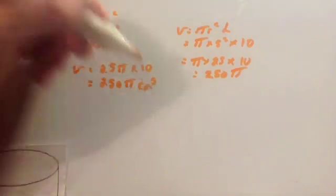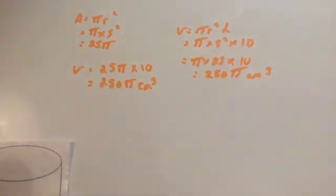Remember units, units will be centimeters cubed. So that's your answer, 250 pi centimeters cubed.